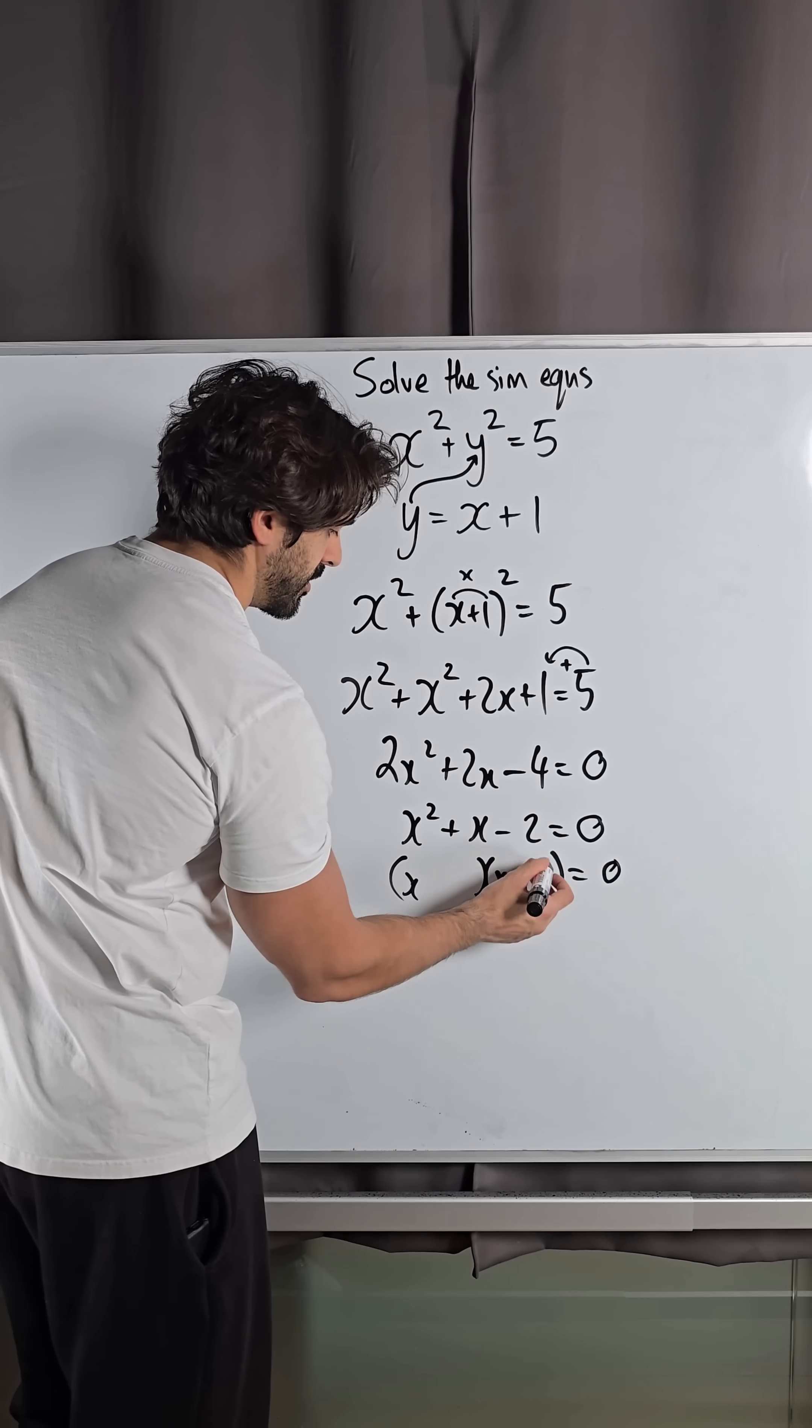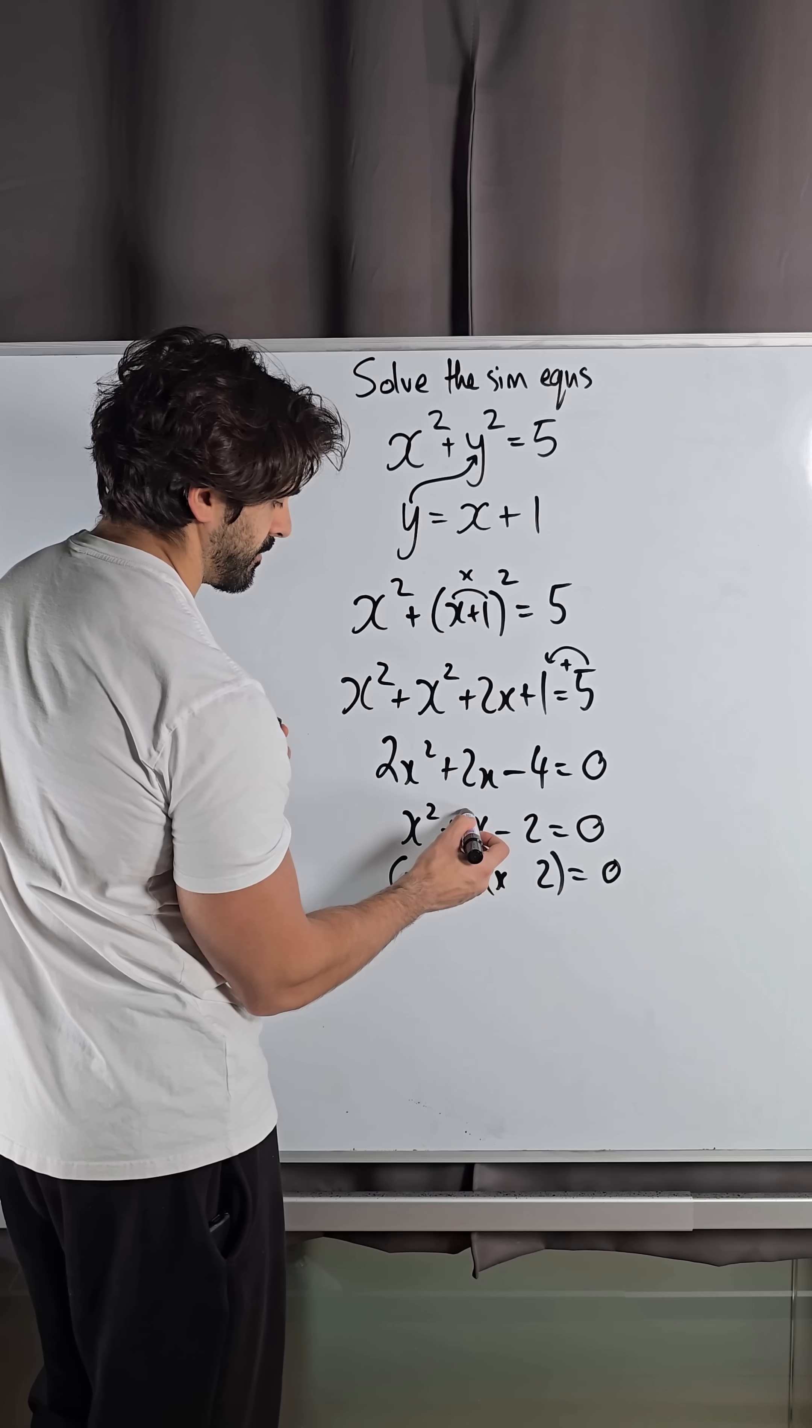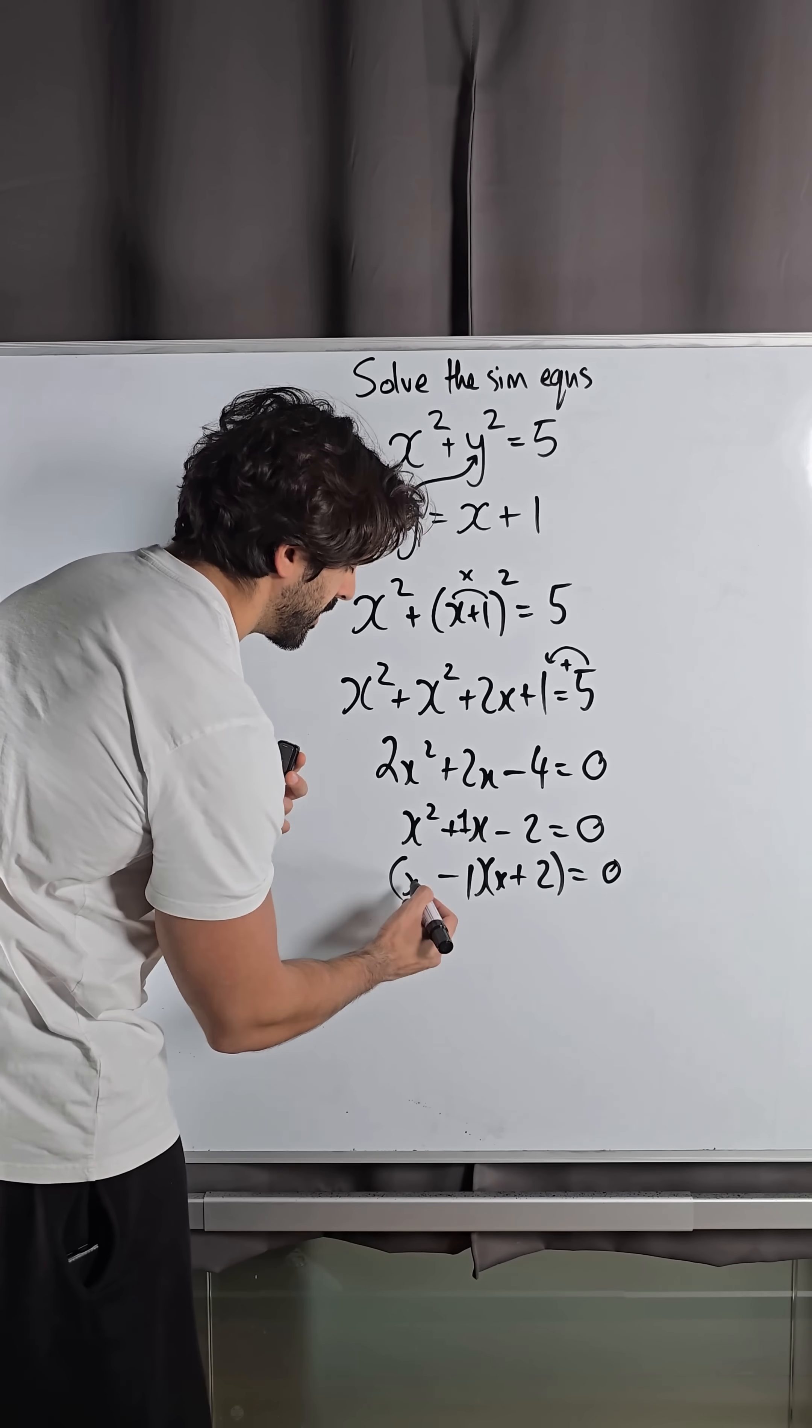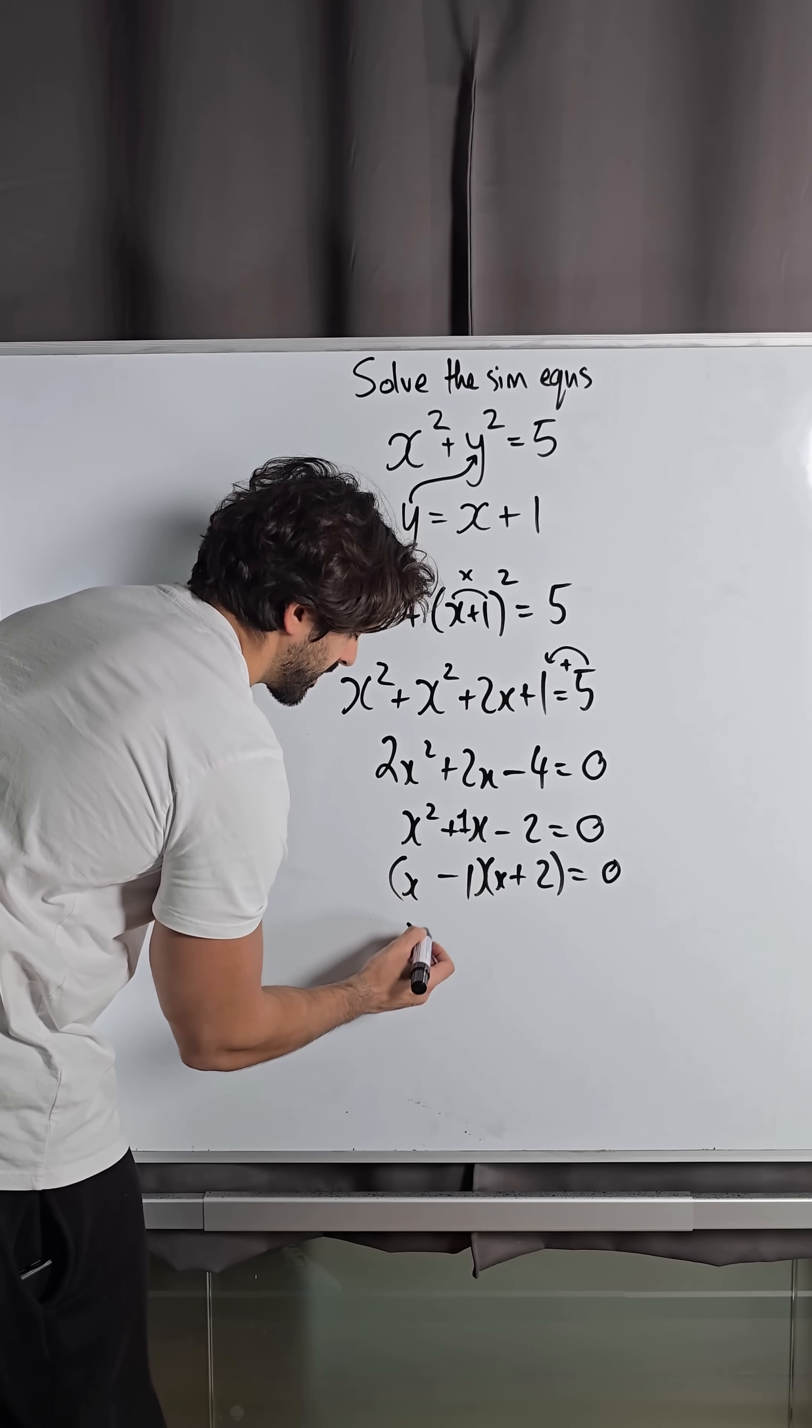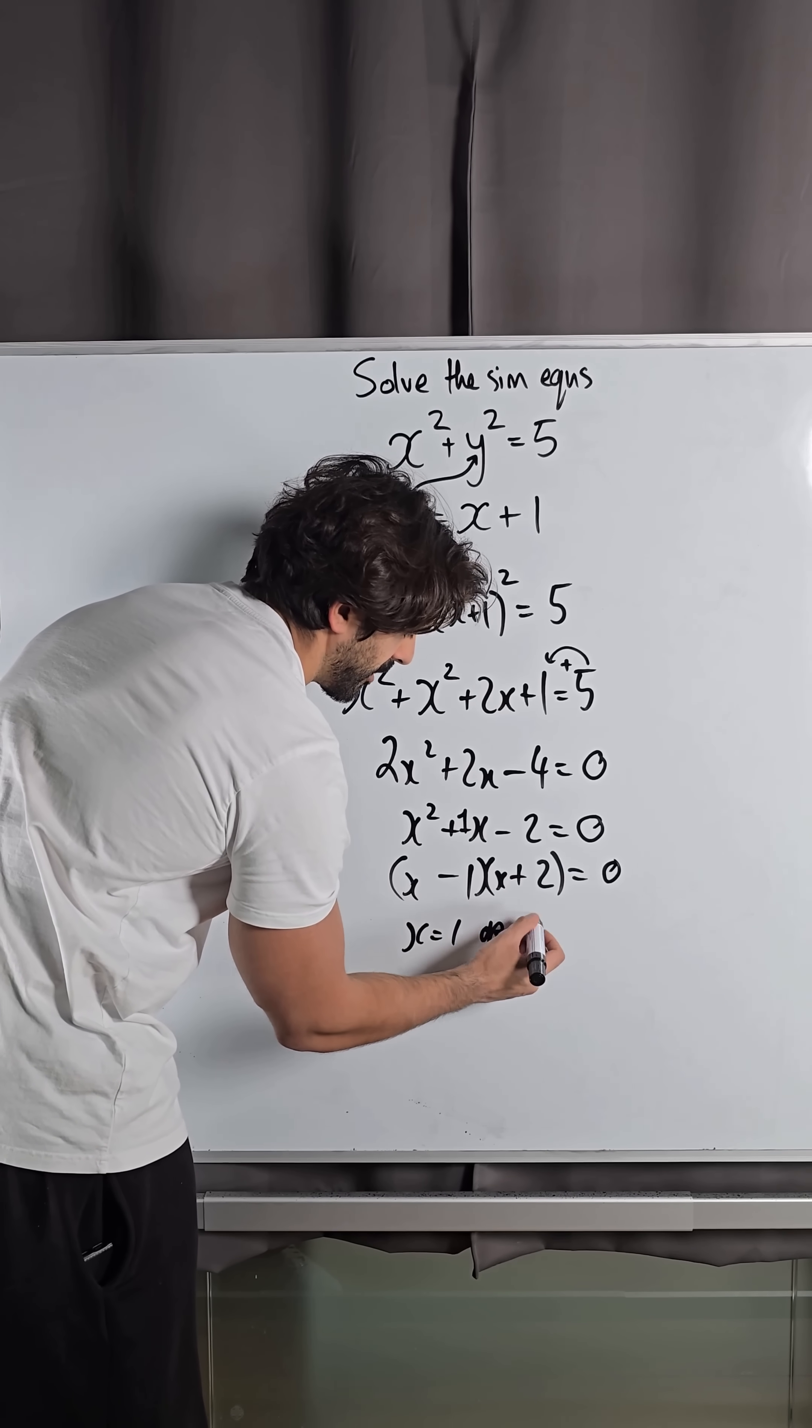So we get x times x is x squared, 2 times 1 is 2. To make plus 1, I need plus 2 minus 1, and you can see that multiplies to give you minus 2. So x minus 1 equals 0, which means x is 1, or x plus 2 equals 0, which means x is minus 2.